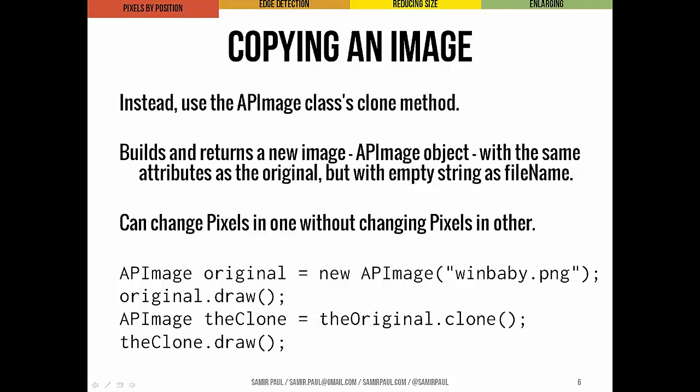Instead of ending up with two separate images, we'd have two names — oldImage and newImage — for a single image object. Fortunately, the APImage class includes a clone method for creating copies. The clone method builds and returns a new image with the same attributes as the original, but with an empty string as the file name, making the two images completely independent of each other. Changes to pixels in one image will have no impact on the other.